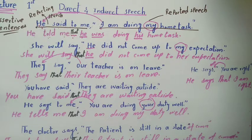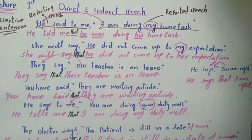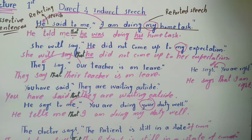When you convert direct into indirect speech, remember that if the reporting speech has a past tense, then you must change the tense of the reported speech accordingly. In assertive sentences, the inverted commas are removed and we use 'that' as a subordinate conjunction.